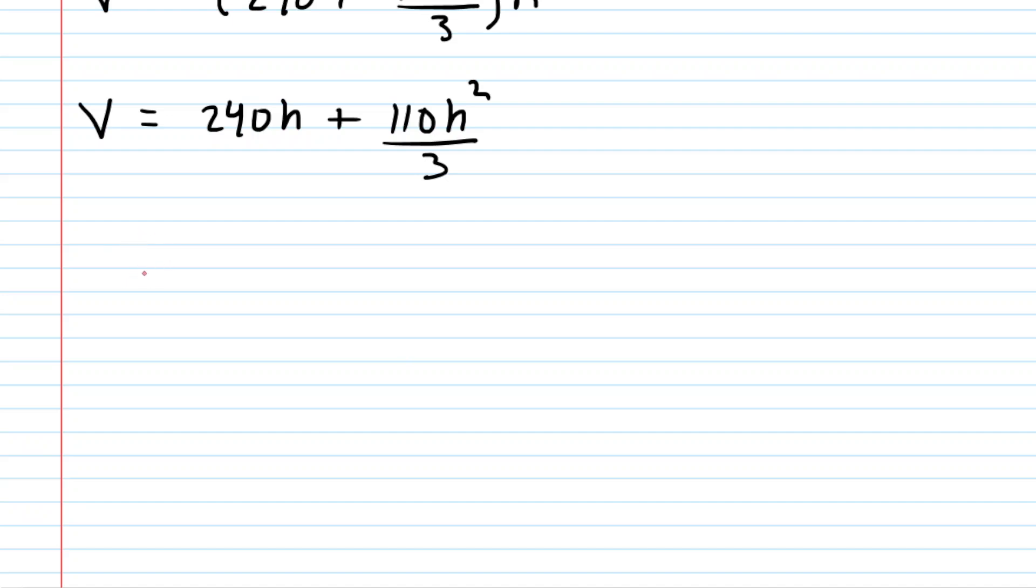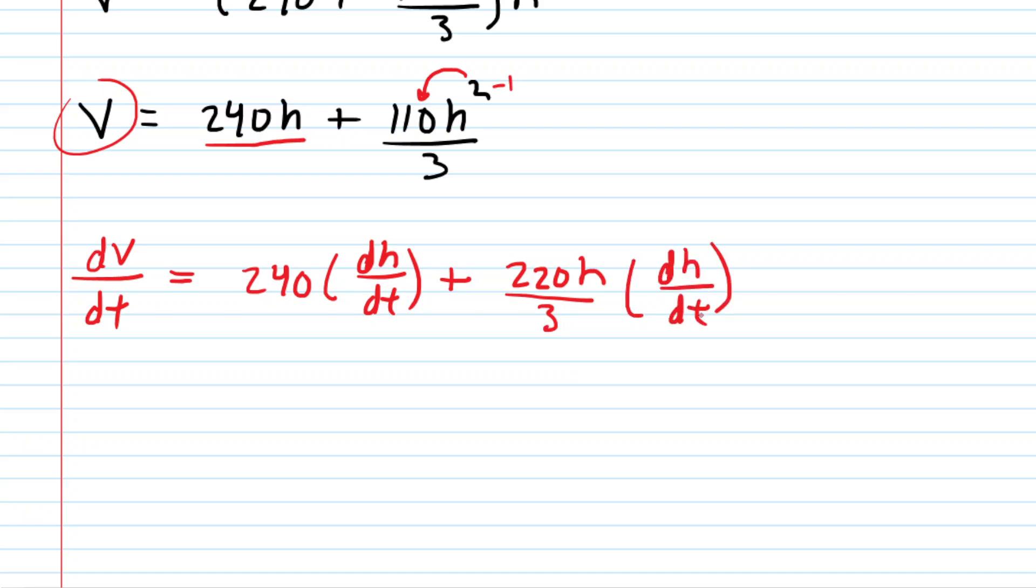This is really good now because we have the volume expressed in terms of h, and it's really well simplified. So at this stage of the problem, we're ready to differentiate with respect to time. Remember, this is a related rates problem. In these problems, once you have your equation expressed in terms of a single variable, you want to then take the derivative with respect to time. For example, volume, if we differentiate that with respect to time becomes dV/dt. Now on the other side, the derivative of 240h with respect to time would be 240, but then don't forget to multiply by the derivative of the height with respect to time. A lot of students forget to multiply by that dh/dt. They'll just write that the derivative is 240, but you want to make sure you also multiply by dh/dt. Now similarly over here, we're going to do a power rule. So we multiply the 2 by the 110. That's going to give us 220h. We subtract 1 from that power, so that becomes h to the 1. This is all over 3, but once again, don't forget to multiply by the derivative of the height with respect to time.